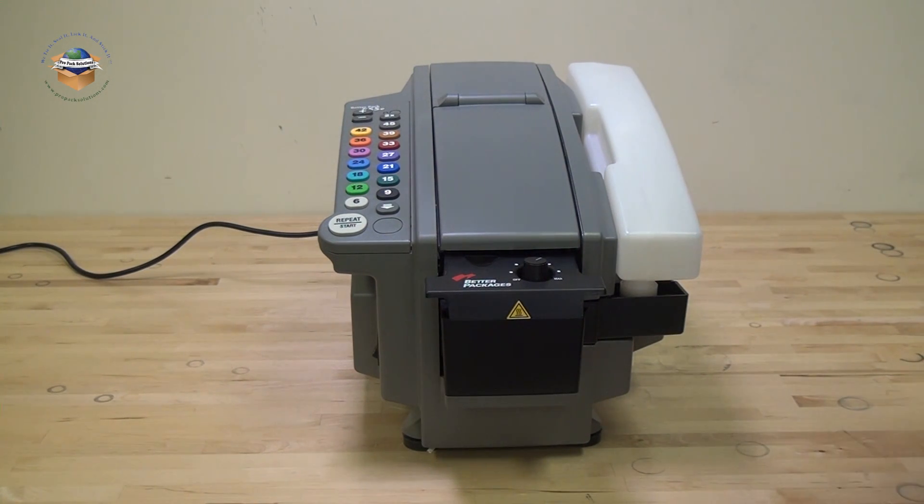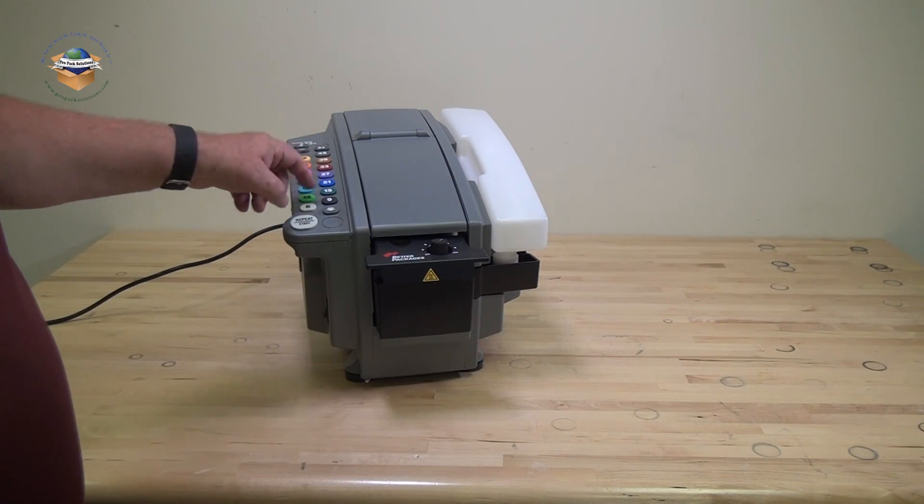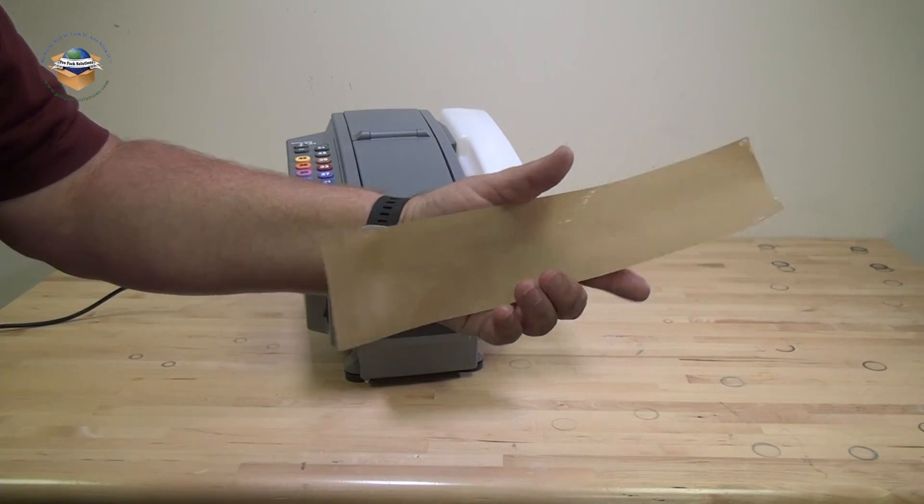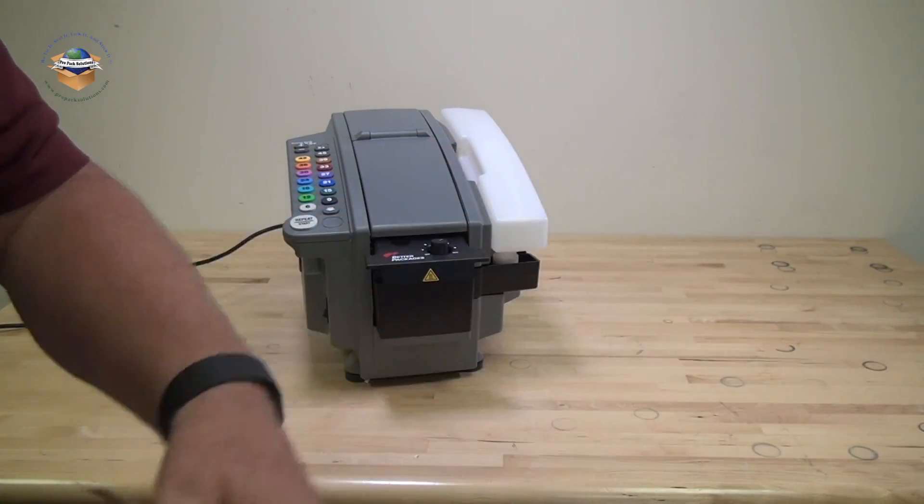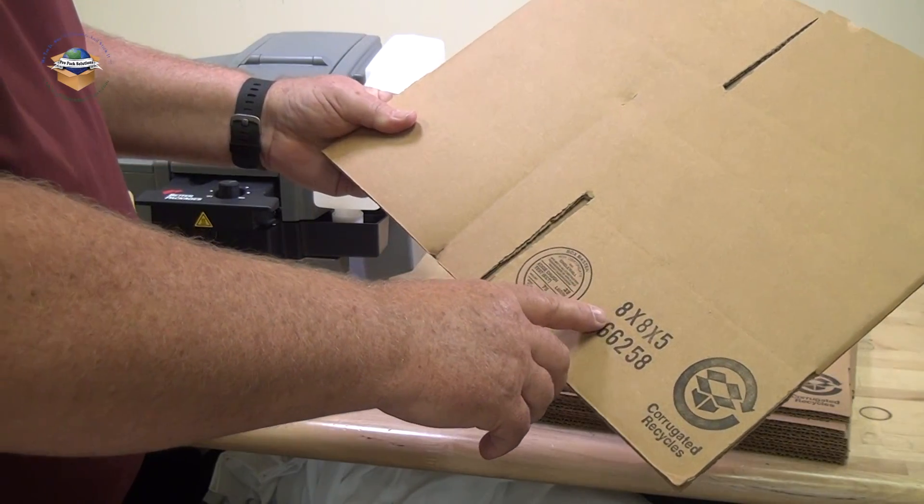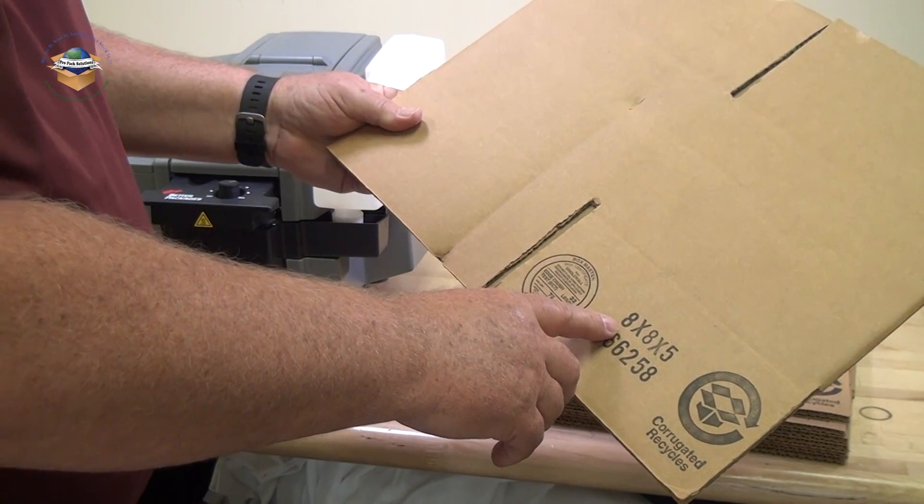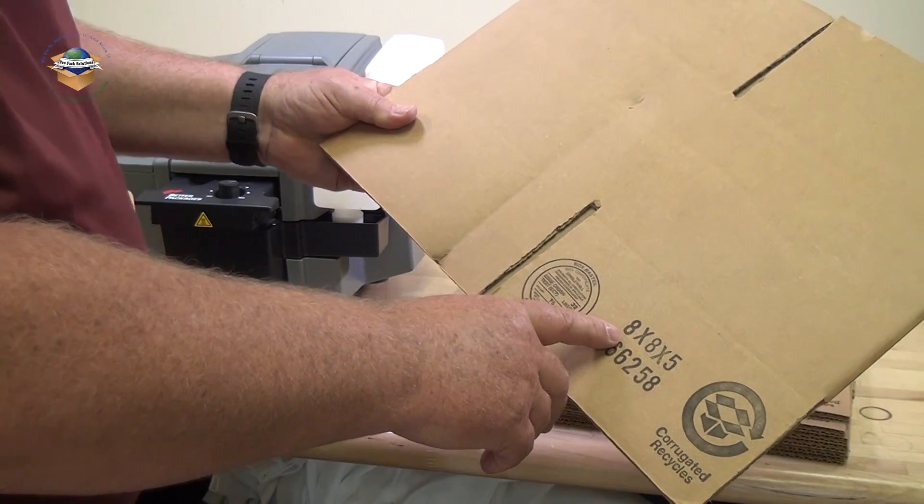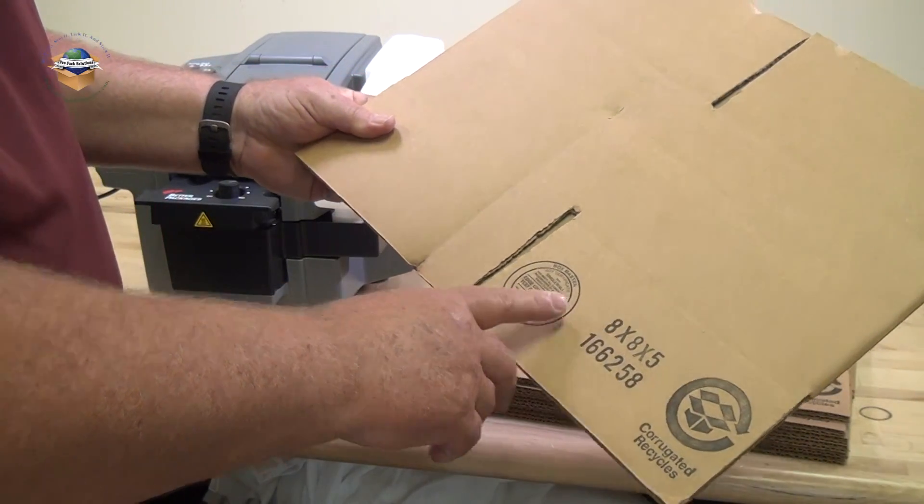One of the ways to handle the tape is to cup it. By cupping the tape, you can keep the gummy stuff off your fingers. When you get ready to seal a box, you'll take the length of the box, add six inches, and go to the next highest number. In this case, we have an eight, plus six is 14, plus one is 15.